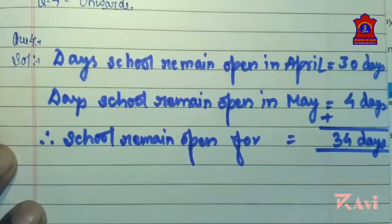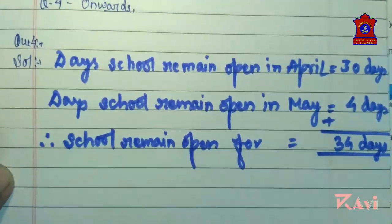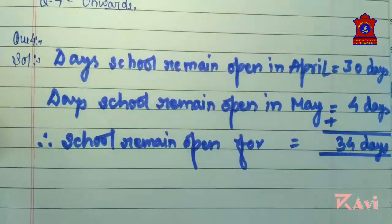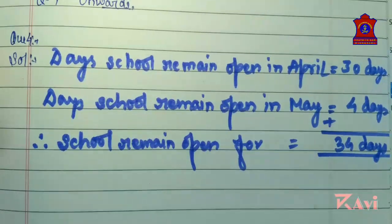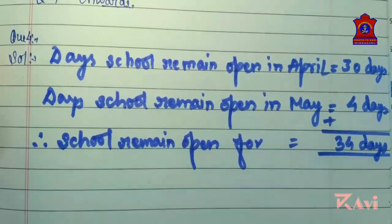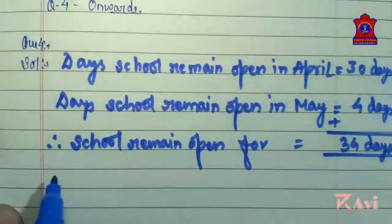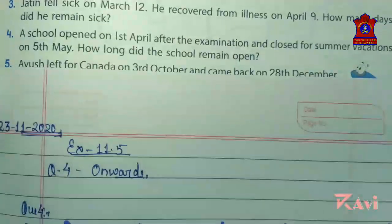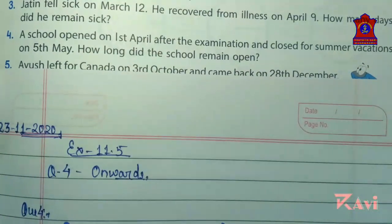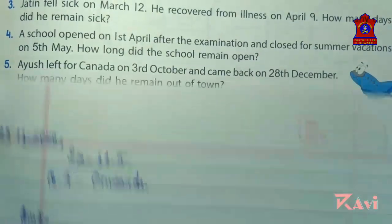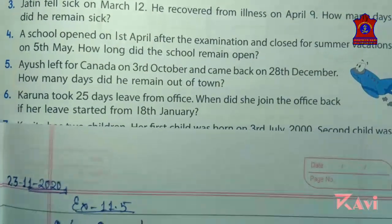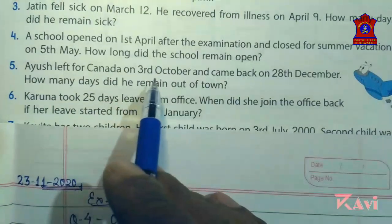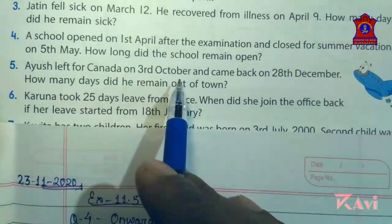Like this you have to solve this question. So question number 4 is done. Now let's move to question number 5. Let's read question number 5: Ayus left for Canada on 3rd October.